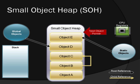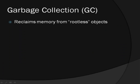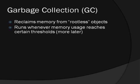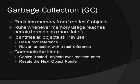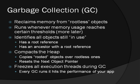.NET will treat all rootless objects as garbage that needs to be collected. .NET uses a piece of functionality called the garbage collector that's in charge of reclaiming the memory used by rootless objects. The garbage collector runs whenever the memory used by the heap reaches certain thresholds. It identifies all rooted objects — those with a direct root reference or an ancestor with one — and then compacts the heap by copying the rooted objects over the rootless ones. An important point to remember is that when the garbage collector runs, all executing threads are suspended.